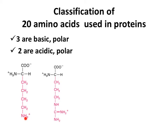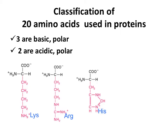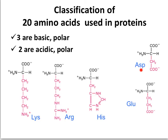Lysine contains only one nitrogen and arginine contains three nitrogens. The side chain of histidine is an aromatic ring that contains two nitrogens. All three are positively charged at pH 7. The two acidic amino acids are aspartic acid (or aspartate) and glutamic acid (or glutamate). They are acidic because the side chain contains a carboxylic acid group.